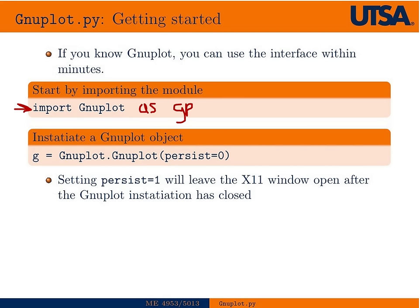But then to start using it, you need to instantiate a Gnuplot object. The object here is going to be stored as a variable G, but that could be anything. It could be F or H or any unique variable name.